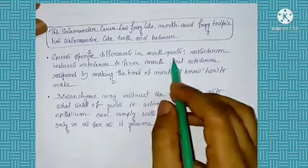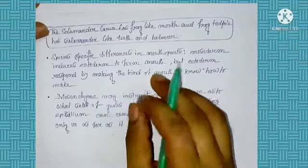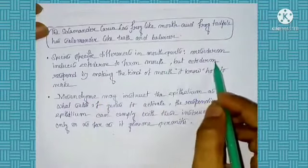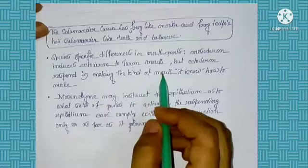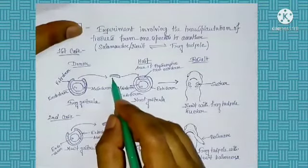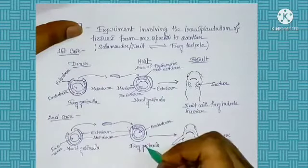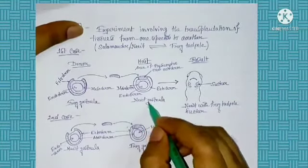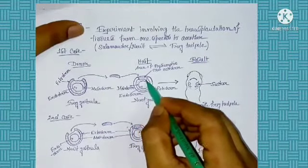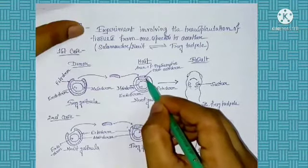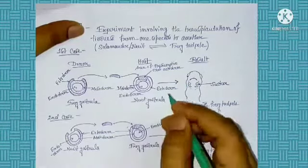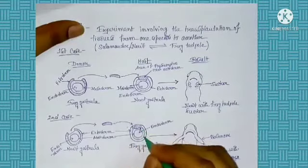So in this experiment, the salamander larva has a frog-like mouth and the frog tadpole has salamander-like teeth and balancer. There are species-specific differences in the mouth parts because the salamander and the frog are different species, so their mouth parts are also different. Mesoderm induces ectoderm to form a mouth, but the ectoderm responds by making the kind of mouth it knows how to make. When the ectodermal portion is transplanted, the mesoderm present just beneath the ectodermal region induces this ectodermal portion to form the mouth.